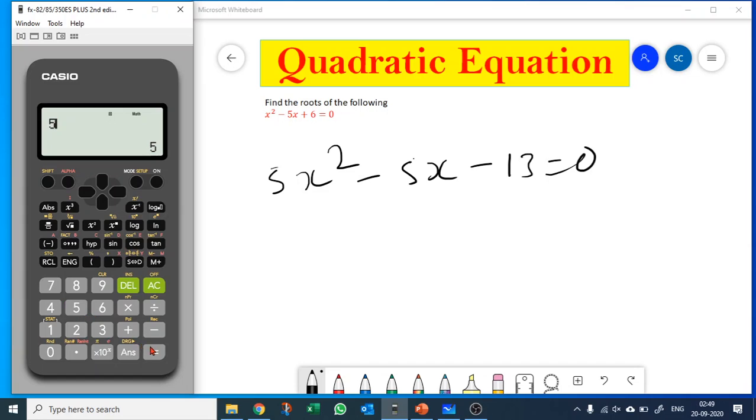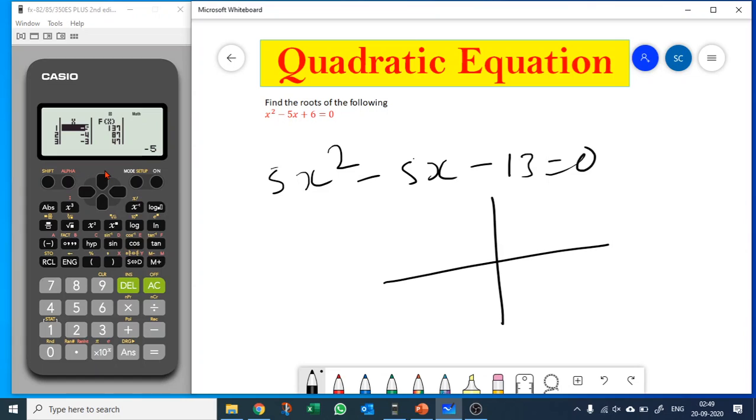And again let's start from negative 5 to positive 5, step size 1 is okay. So you can see negative 5 is 137, negative 4 is 87. In a way basically what is happening, this graph is decreasing somewhere, so definitely either it is going to intersect the x-axis or it will remain above. Let's see what happens. Negative 3 is 47.